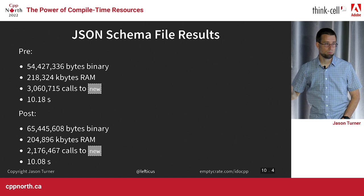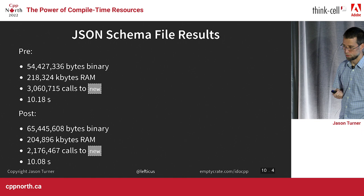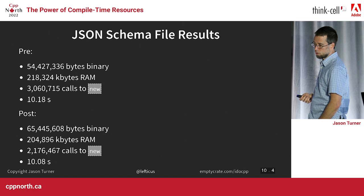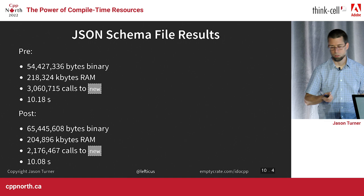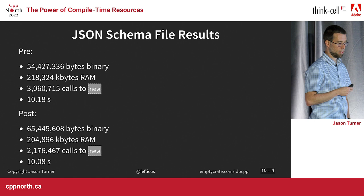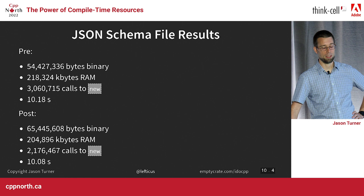So this is what we have. Pre: a 54 megabyte binary. Post: a 65 megabyte binary — I increased the binary size. Pre-work: 218 megs of RAM used. Post-work: 214 megs of RAM — decreased the RAM. And went from 3 million calls to new during a simple run to 2.1 million calls to new. And the runtime went from 10.18 seconds to 10.08 seconds. Massive, right?